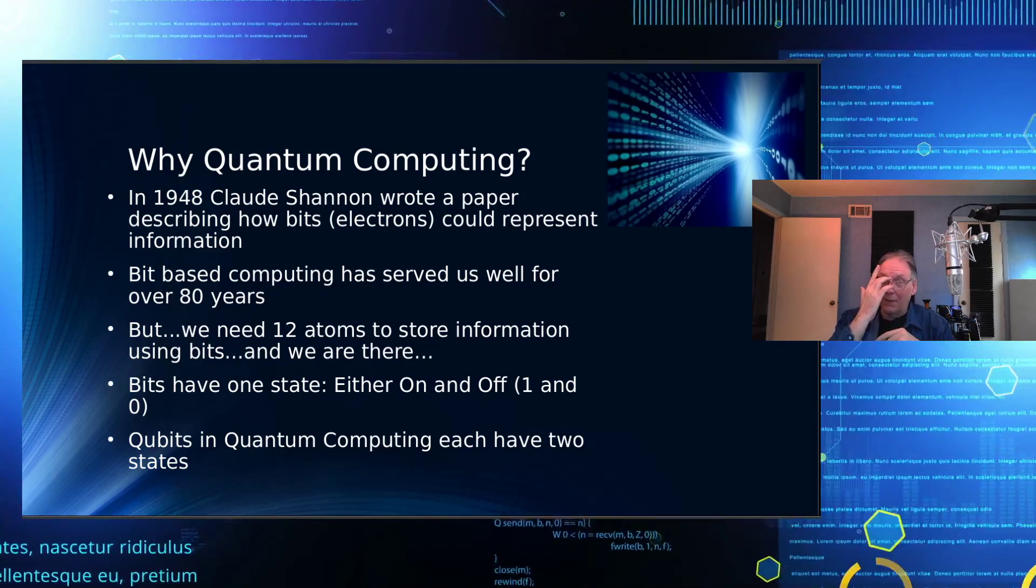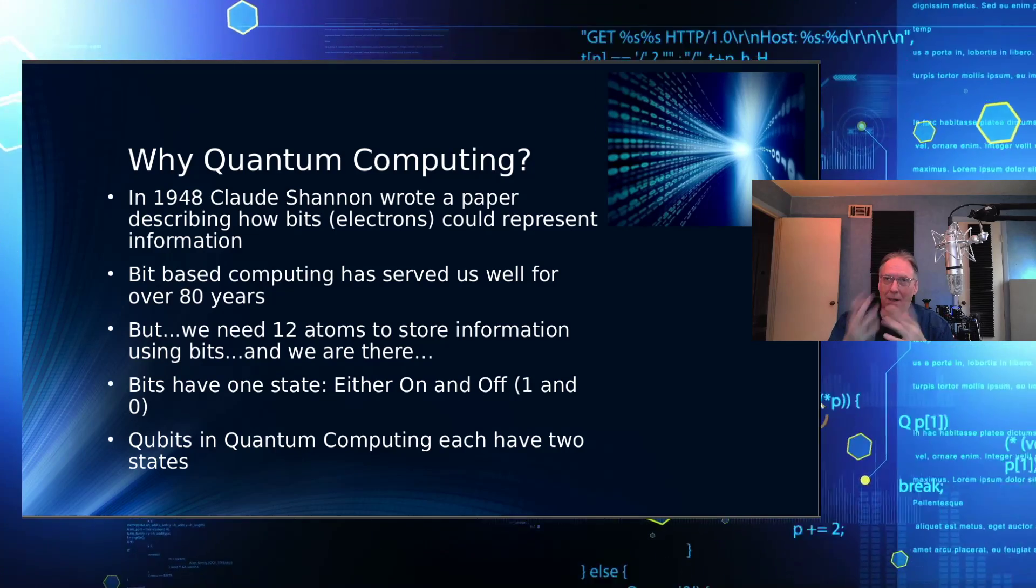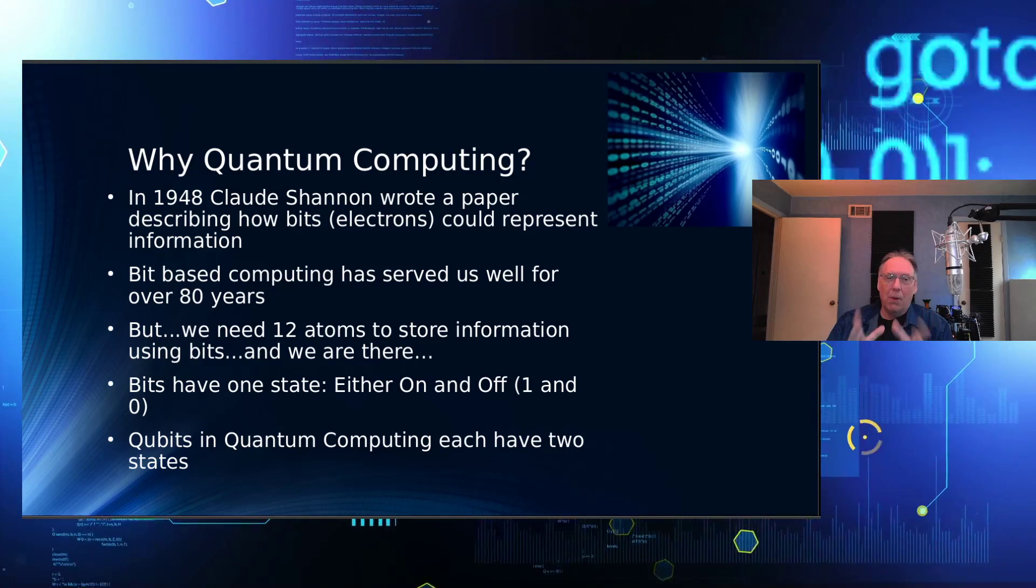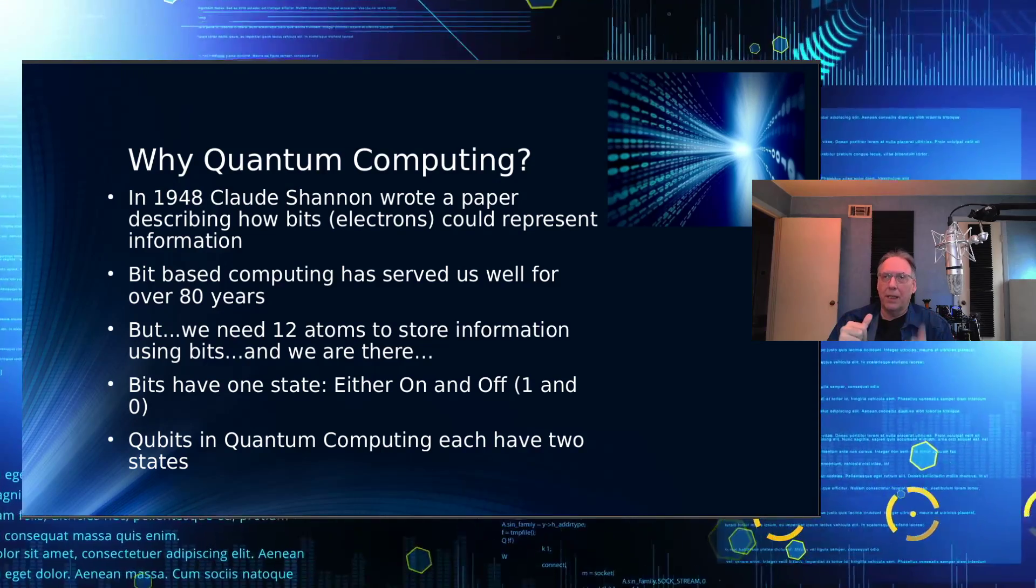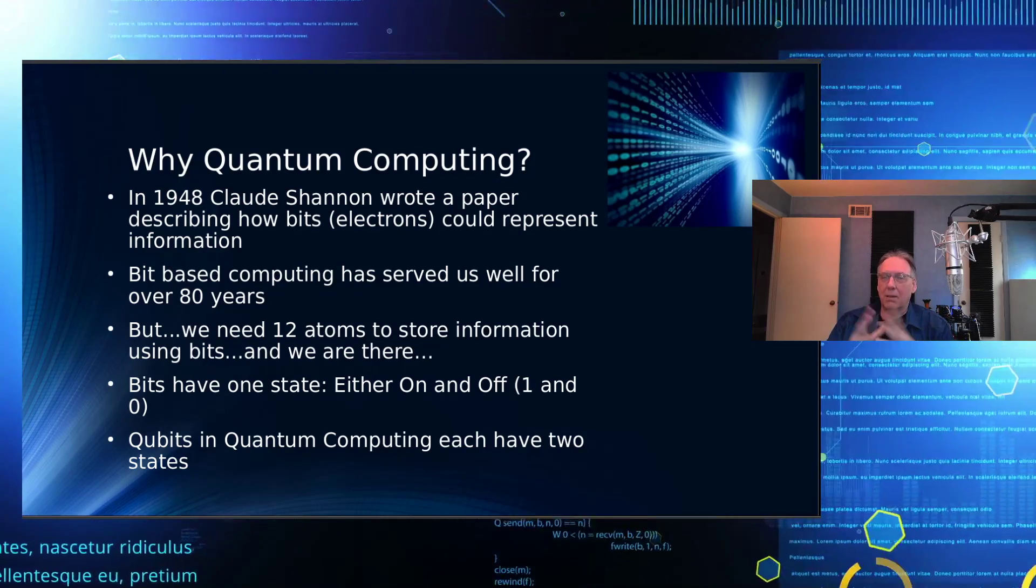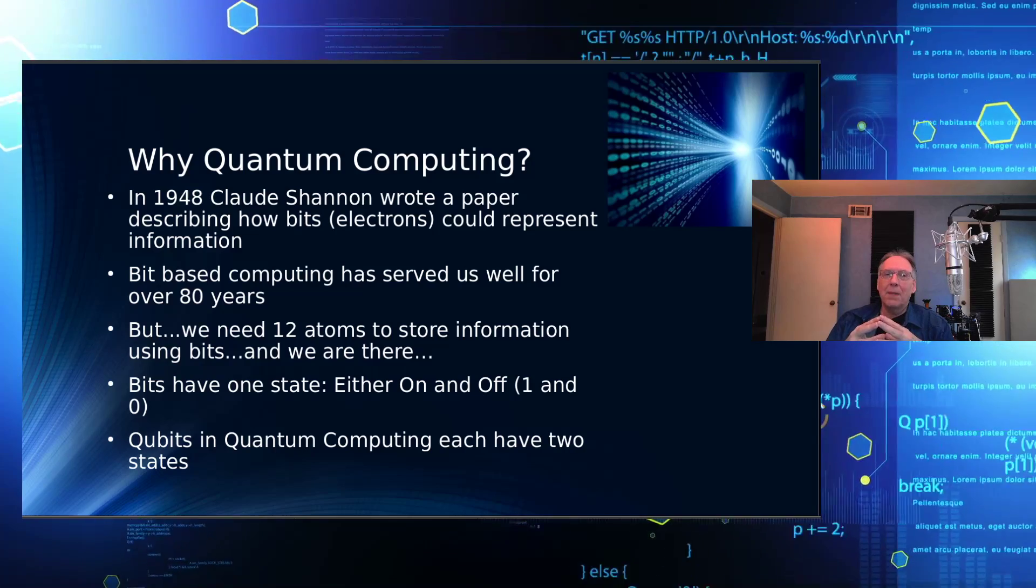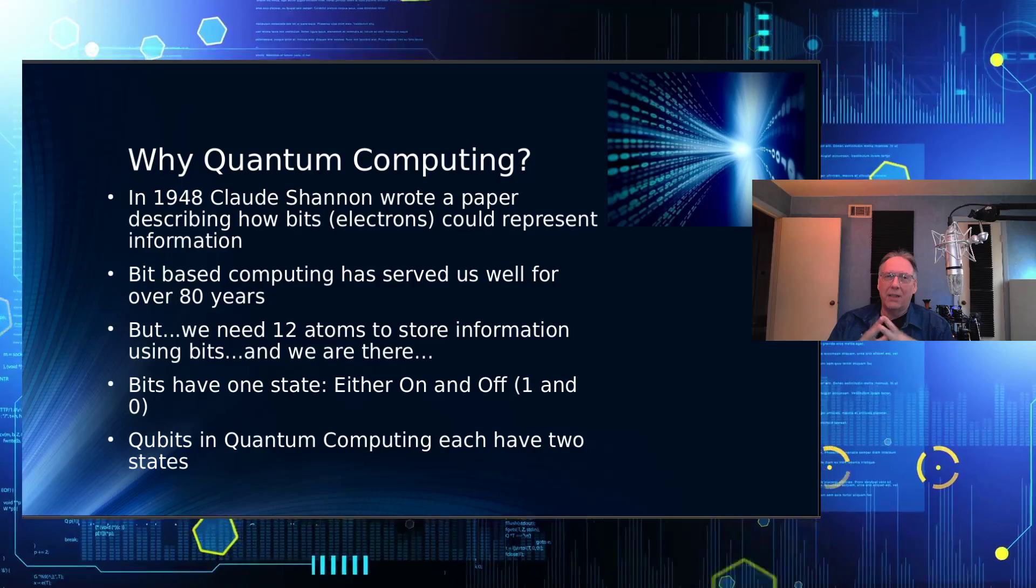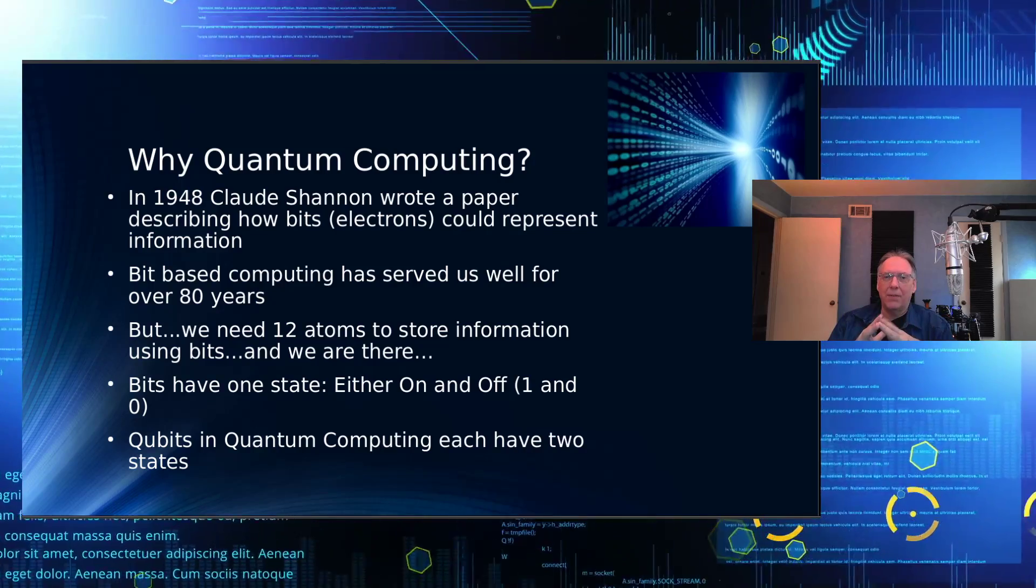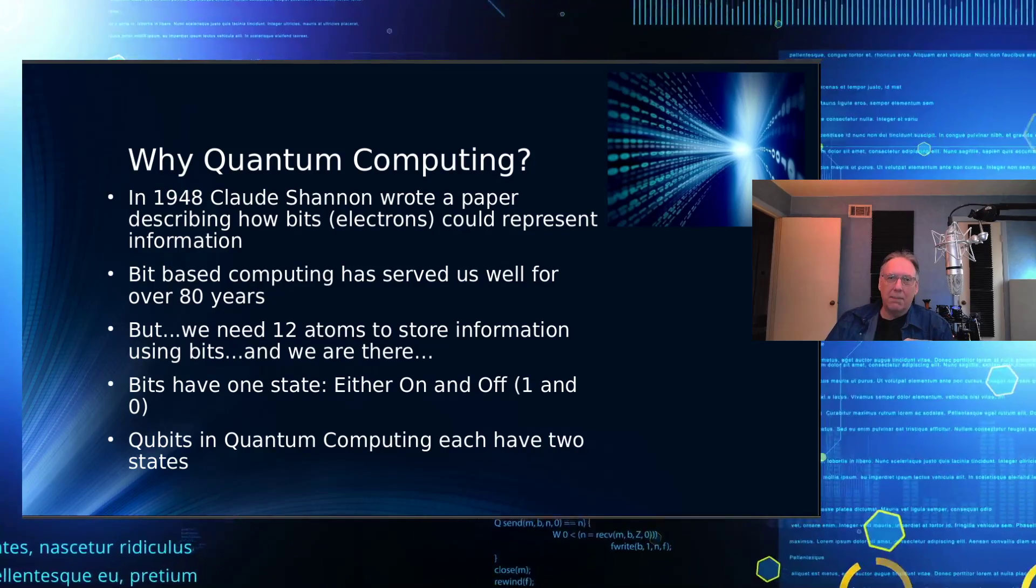So bits have one of two states. It's either on or off. And quantum uses qubits. And qubits have two states for each qubit. They exist in two states simultaneously. I'll probably do a video entirely dedicated to quantum if that's of interest to you guys. Let me know in the comments if that's something you'd like to see.